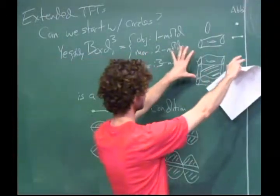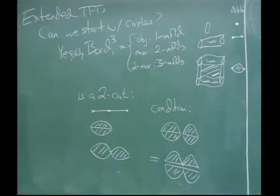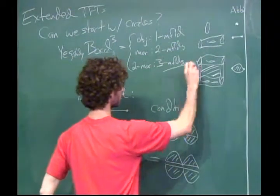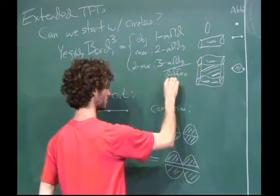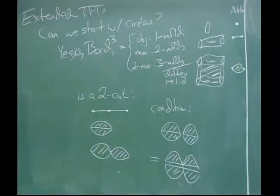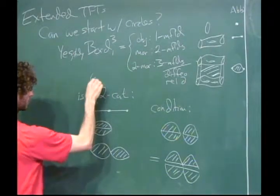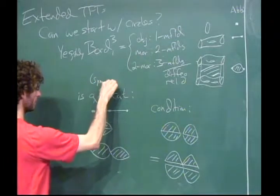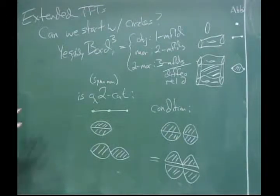At the top level I want to mod out by diffeomorphism rel boundary. This thing is not just a two-category; it's actually a symmetric monoidal two-category, which means it has a commutative multiplication given by disjoint union. I'm not really going to talk about that in detail.